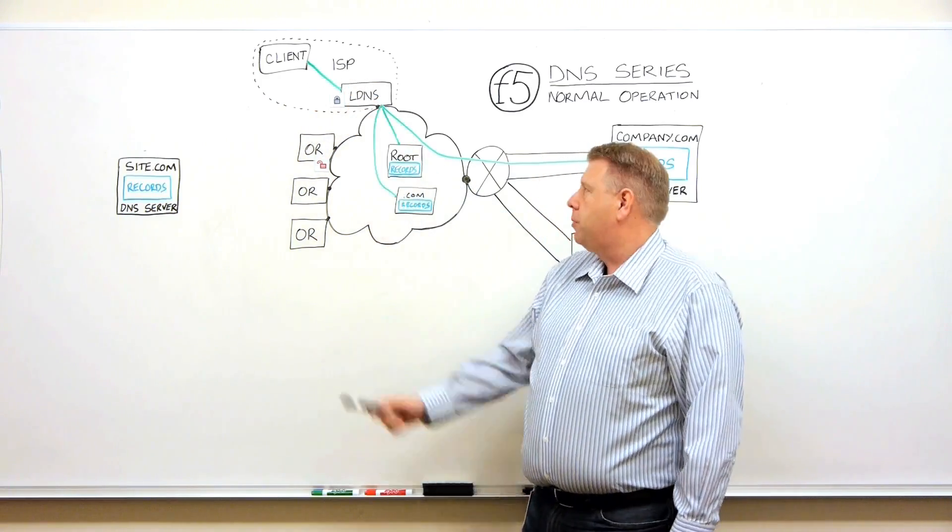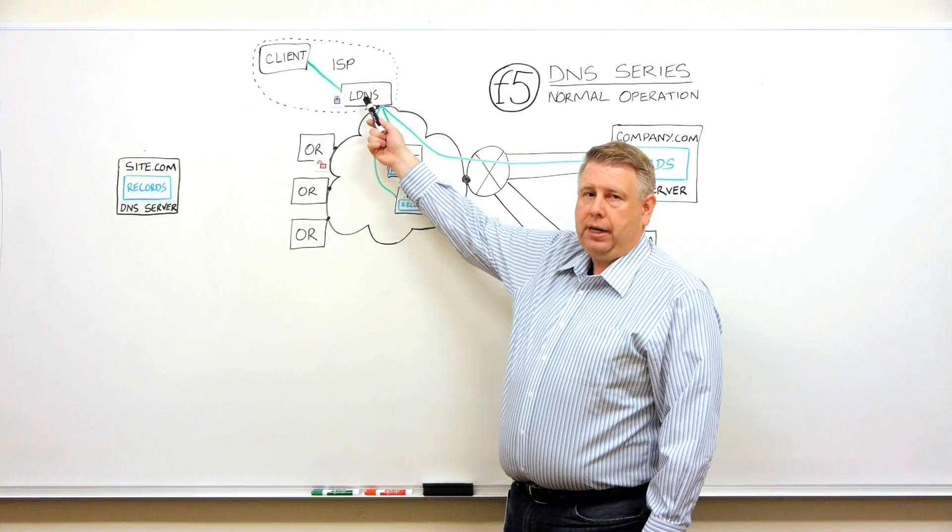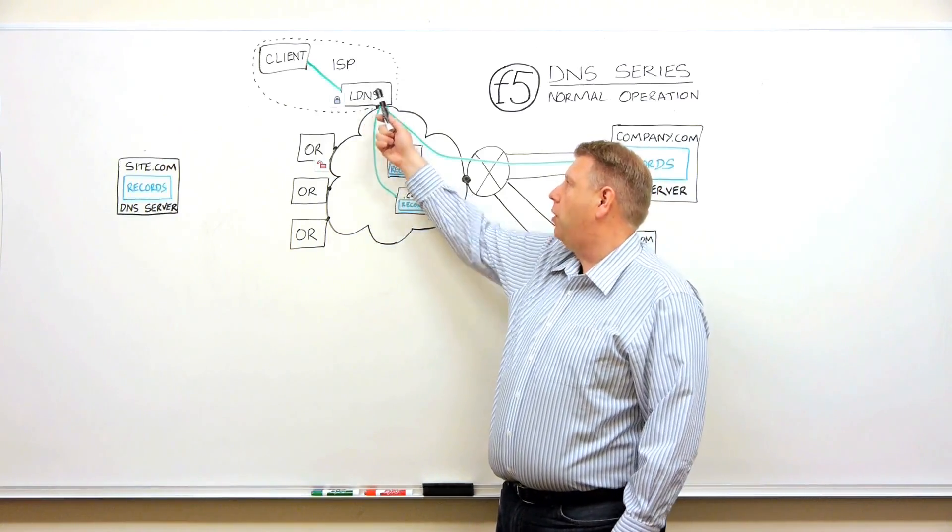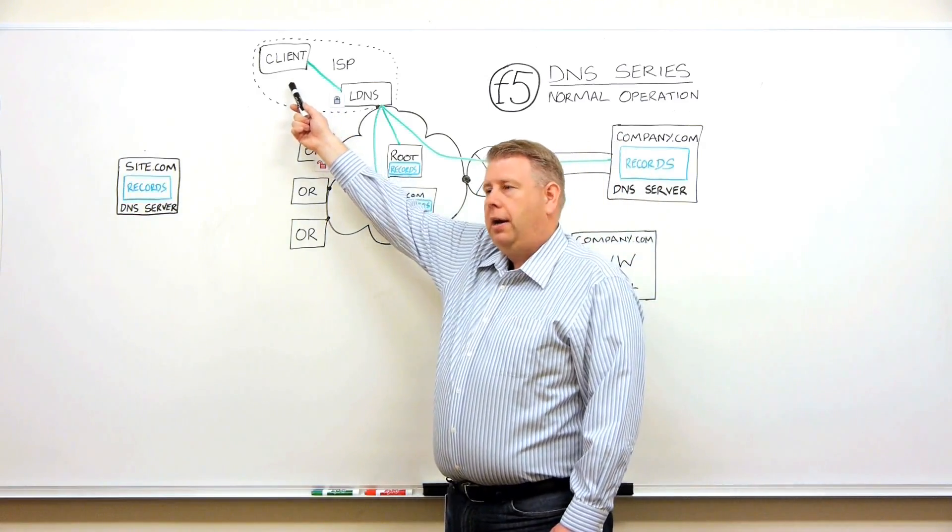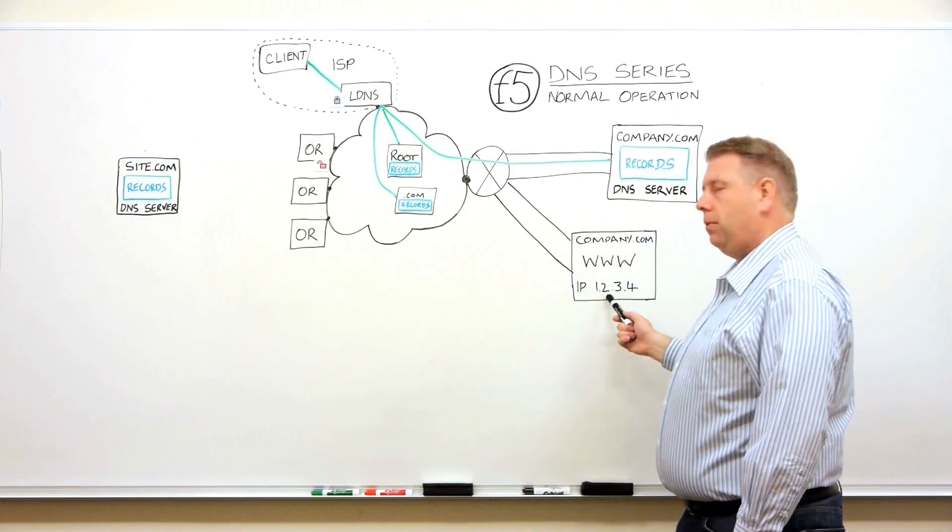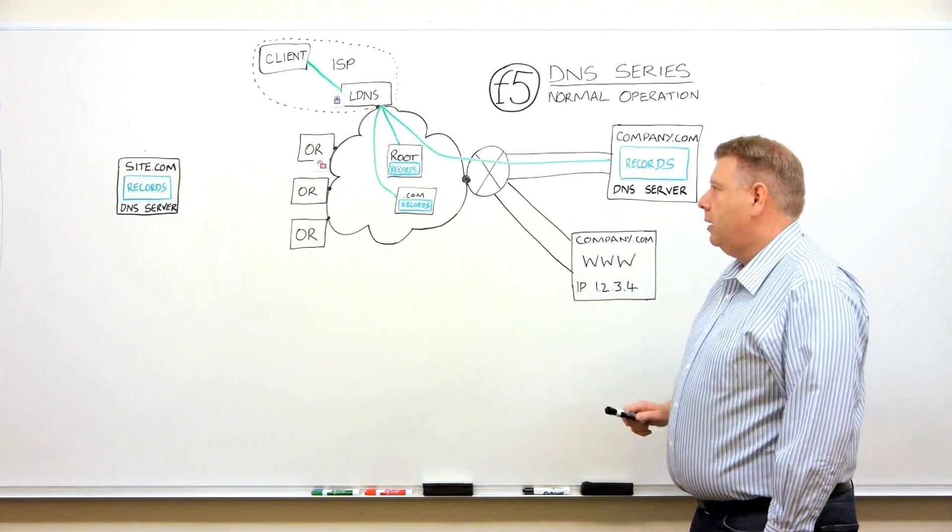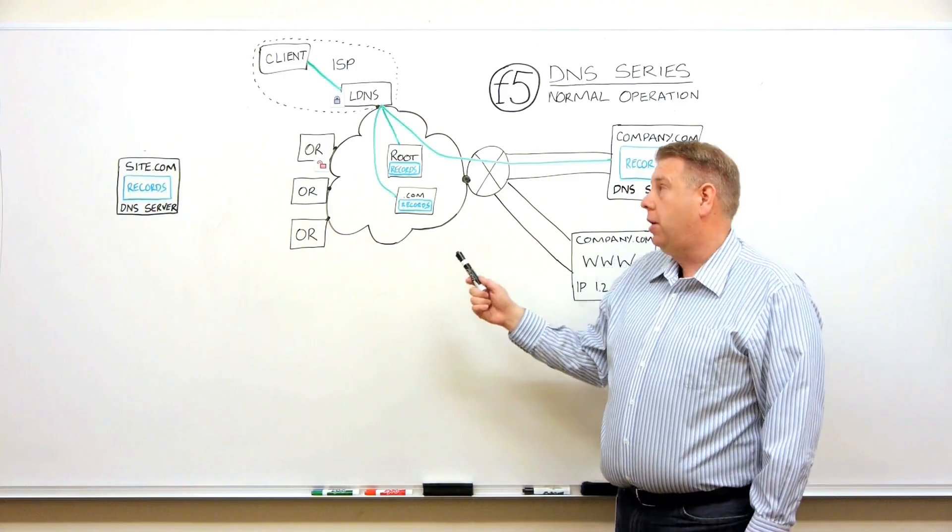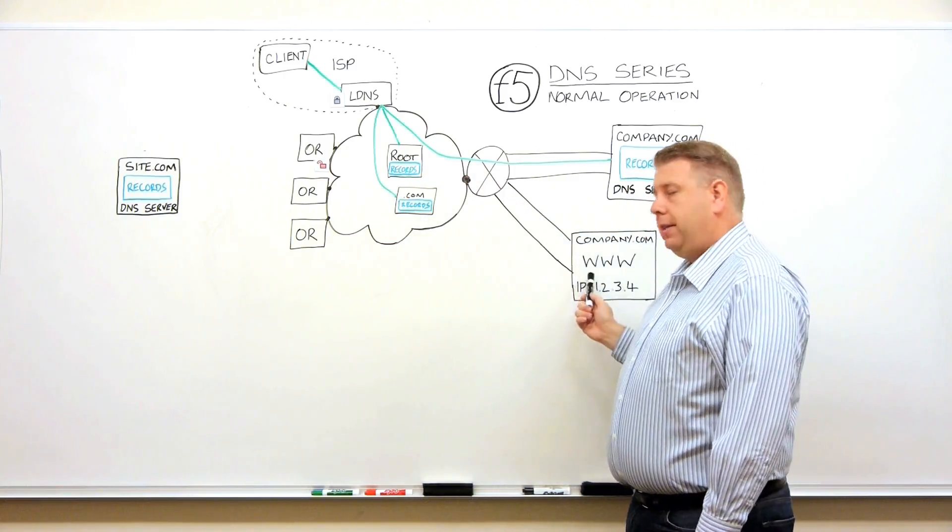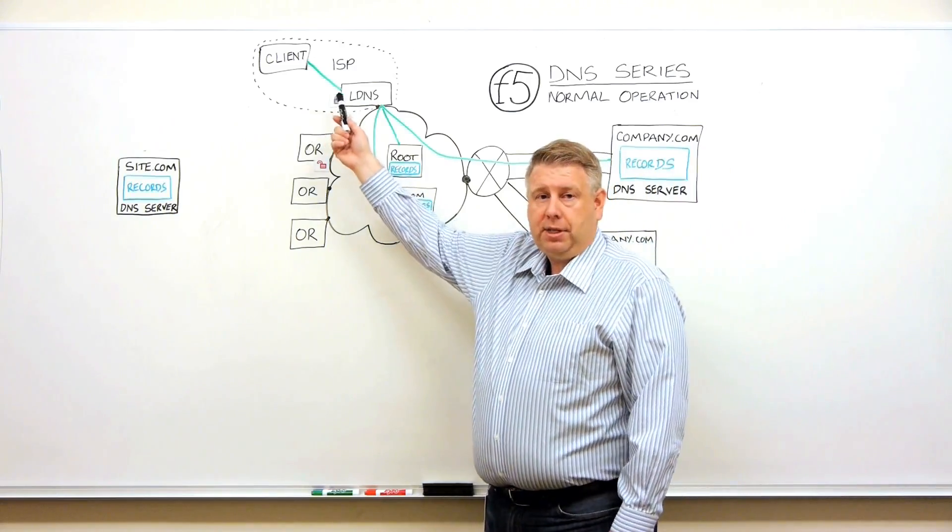Well, inside your Internet Service Provider is something called a local DNS server. Local DNS server is a resolver. Why do we need a resolver? Because this client doesn't understand how to get to this web server, which has an IP address. It just knows that it wants to get to a site, www.company.com. So in order to find this number, it has to go through the Domain Name System.